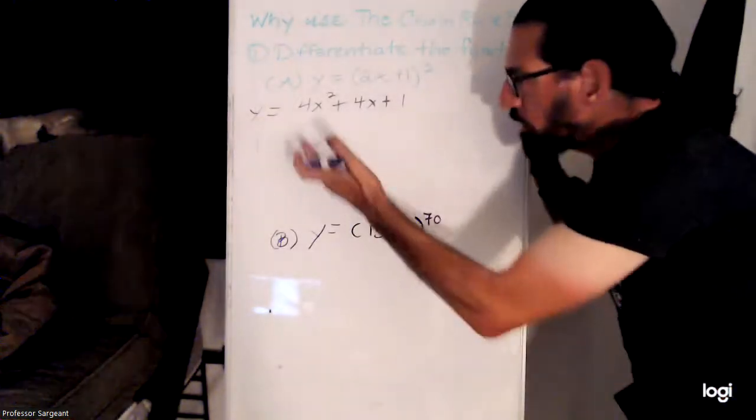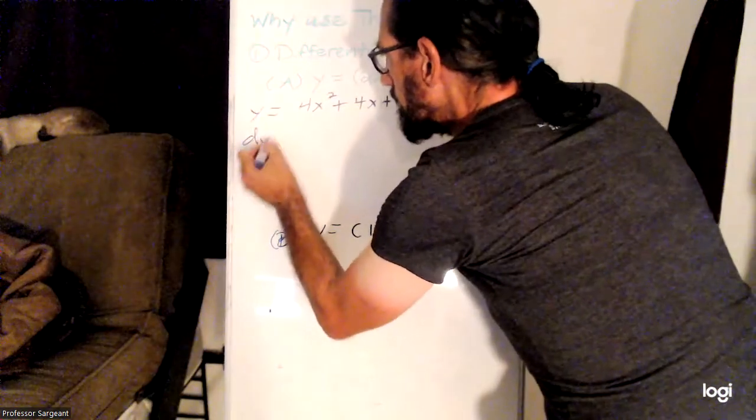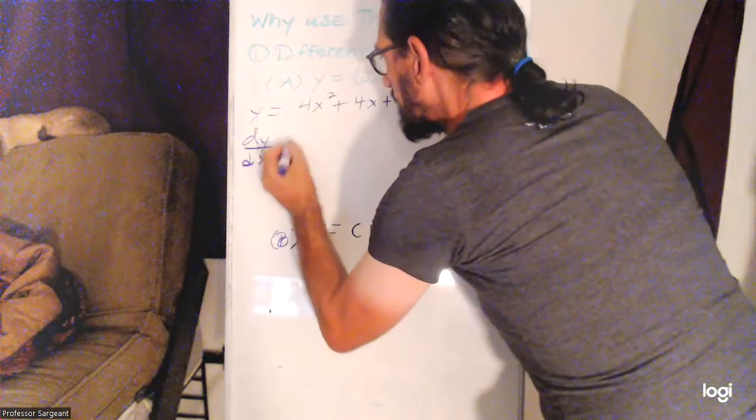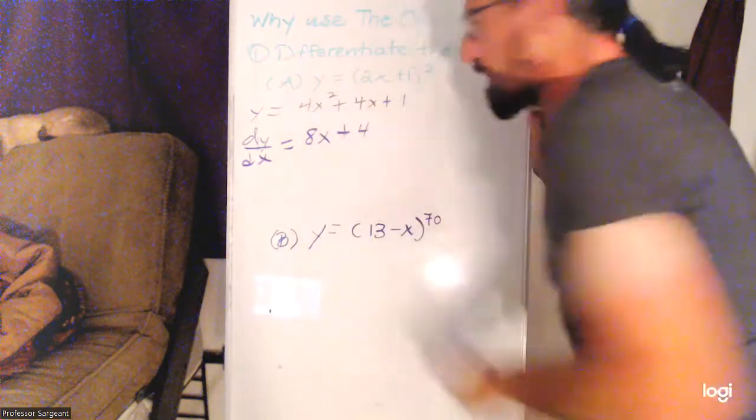So then you could go term by term and apply the power rule and get 8x plus 4.